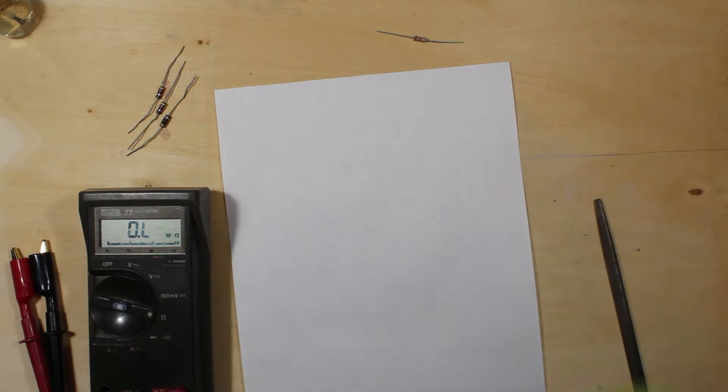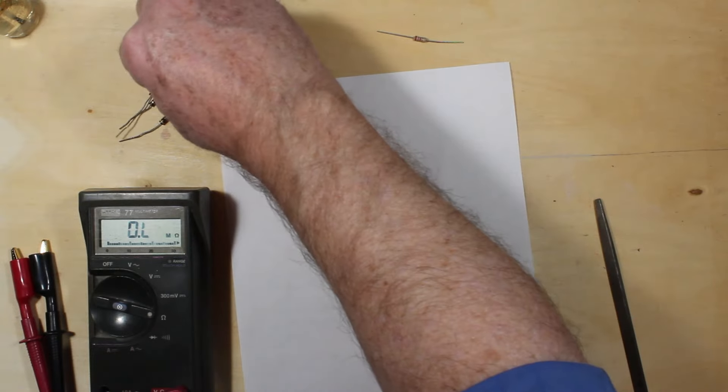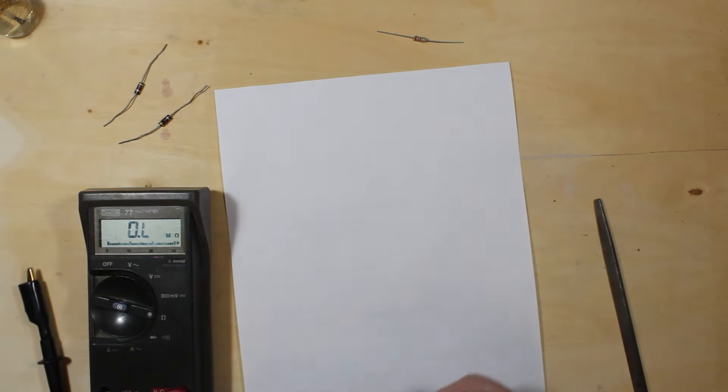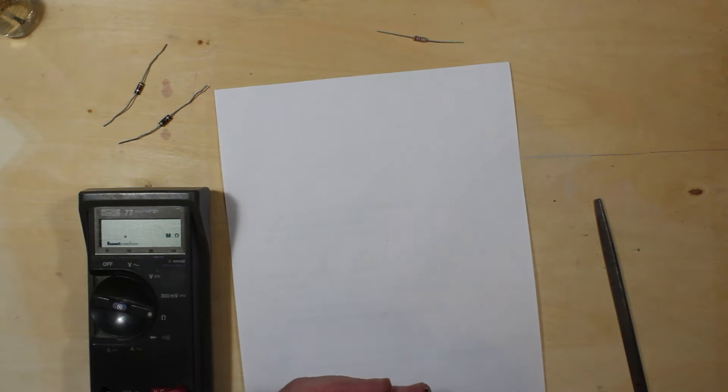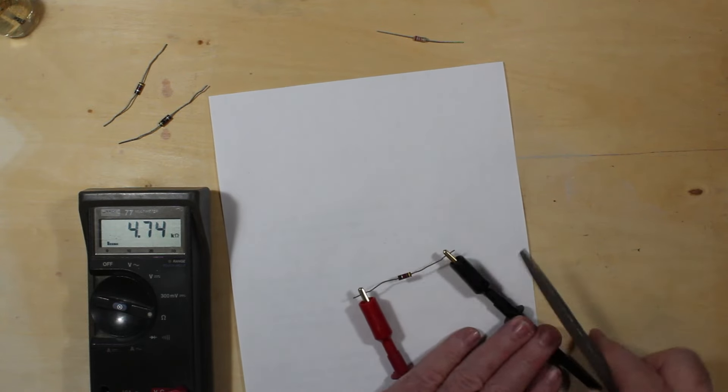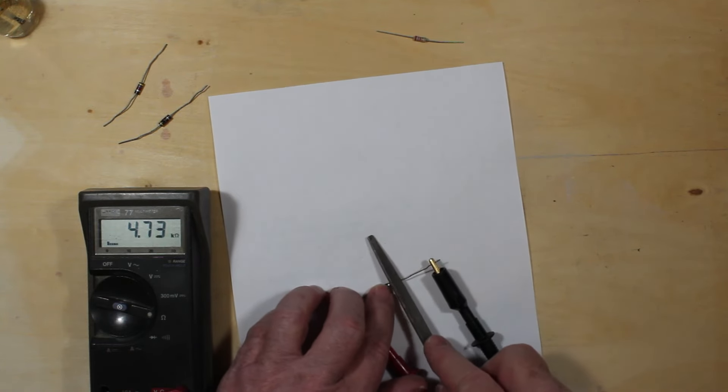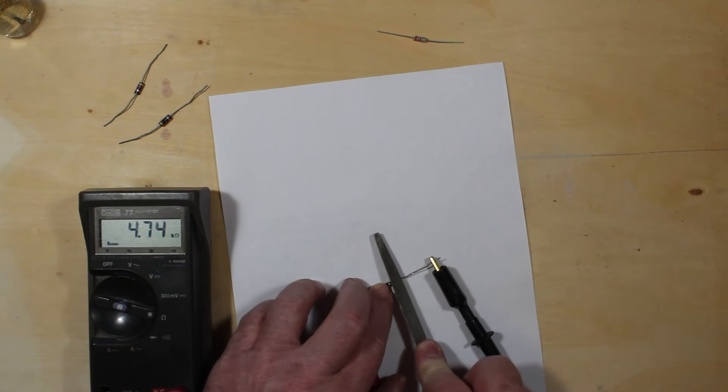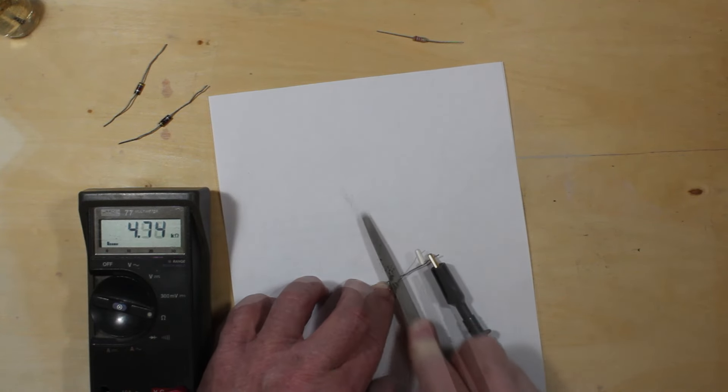These are much more forgiving when you start approaching the value that you want. It's pretty hard to go past it because it still takes a fair bit of material to come out of there. So there's our 4700 ohms and I'm going to start filing at it here and we'll grind this guy up to 5000 ohms and probably end up fairly close.